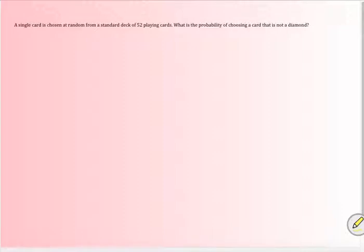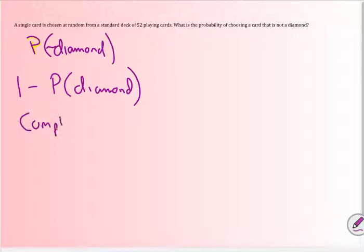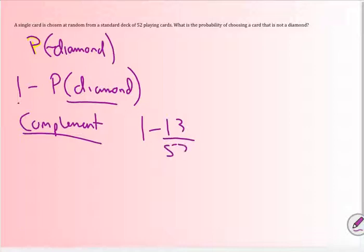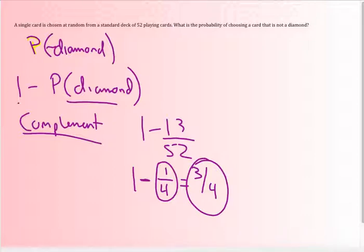A single card is chosen at random from a standard deck of 52 cards. What's the probability of choosing a card that is not a diamond? Here's one way to do it using the complement: one minus the probability of getting a diamond. The probability of a diamond is 13 out of 52, which simplifies to one fourth. So the probability of not getting a diamond is one minus one fourth, which equals three fourths. Okay, that's all I've got — come talk to me with questions, and please double-check your answers because this can get very confusing.